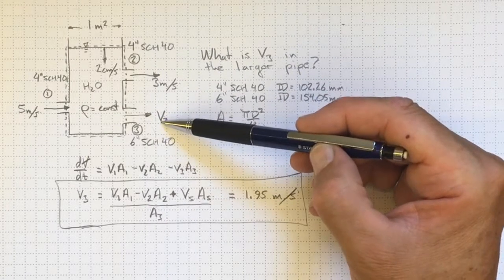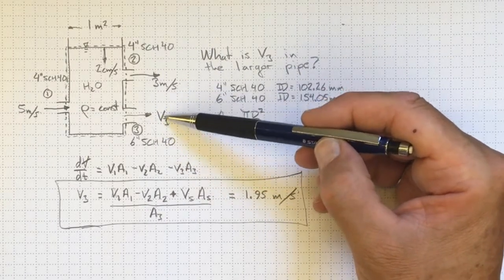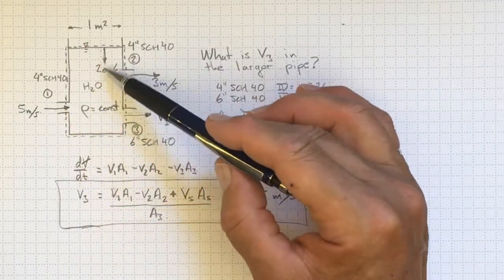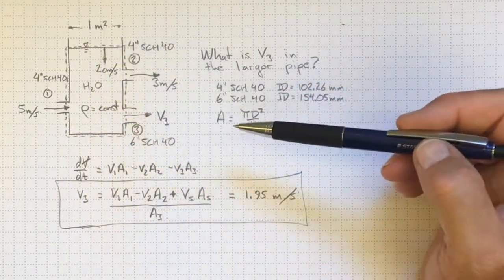So, for instance, if V3 was actually zero, then we'd have a net increase in the volume in the tank. The tank would be filling instead of emptying.